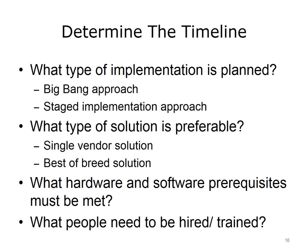The type of EHR chosen may significantly affect the timeline for the implementation process. The timeline will also depend on whether hardware and software prerequisites have been met; for example, the organization must ensure it has sufficient workstations that meet requirements to operate the EHR. The timeline will ultimately depend on the availability of key personnel. The organization should assess whether it needs to hire and train personnel before the implementation and factor these activities into the timeline. Determining the appropriate timeline can be a complex but critical process for a successful EHR implementation.